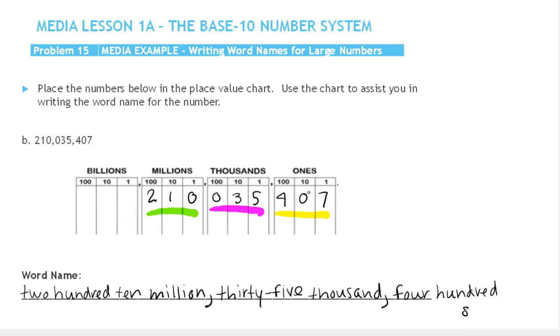Four hundred seven. We don't use the subgrouping for ones. Again, notice we didn't use the word 'and' anywhere. We have commas in between each of the subgroupings of numbers, and we wrote the corresponding name from zero to 999 for each of the subgroupings.